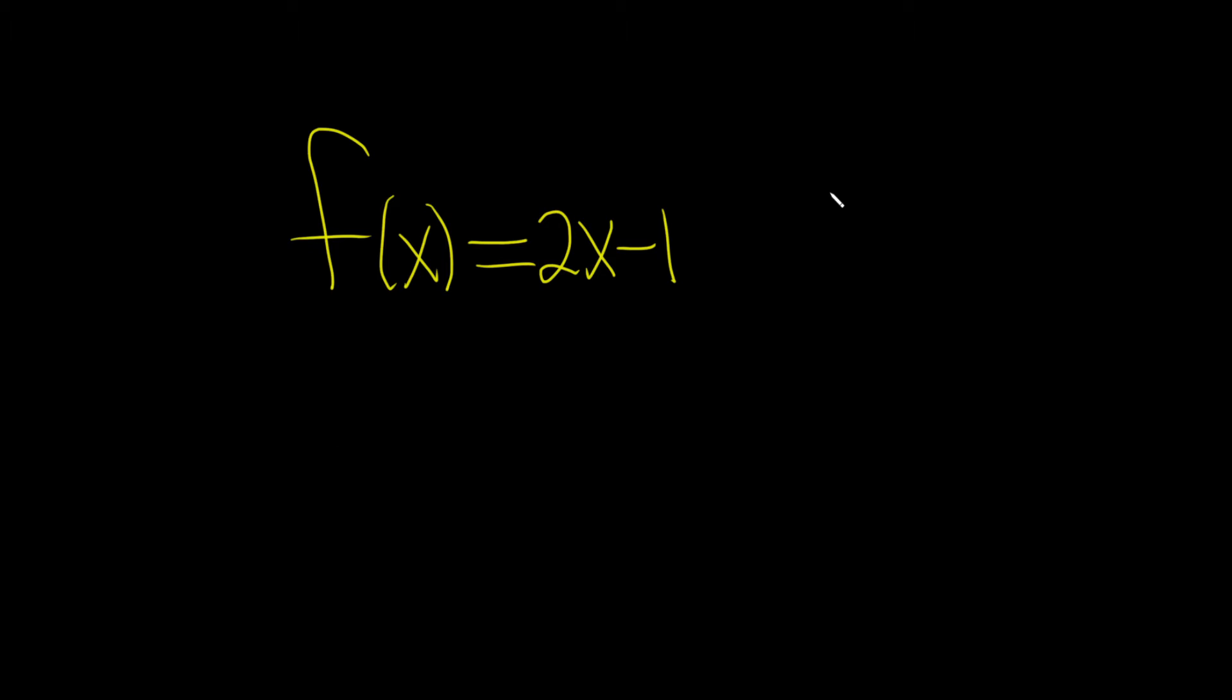Let's do it using intuition first. I'll do it up here on the top right. So this function f takes x, multiplies it by 2, and subtracts 1. So the first thing it does is multiplies x by 2, then it subtracts 1—that's 2x minus 1.